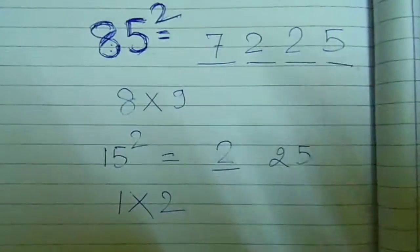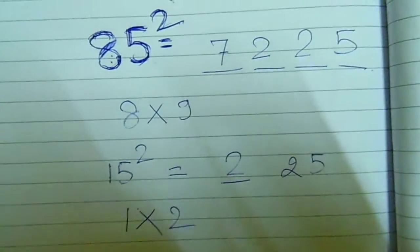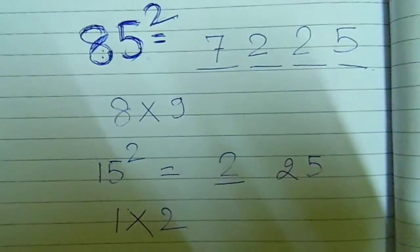This is an easy method to calculate the square of any two digit number ending with 5.